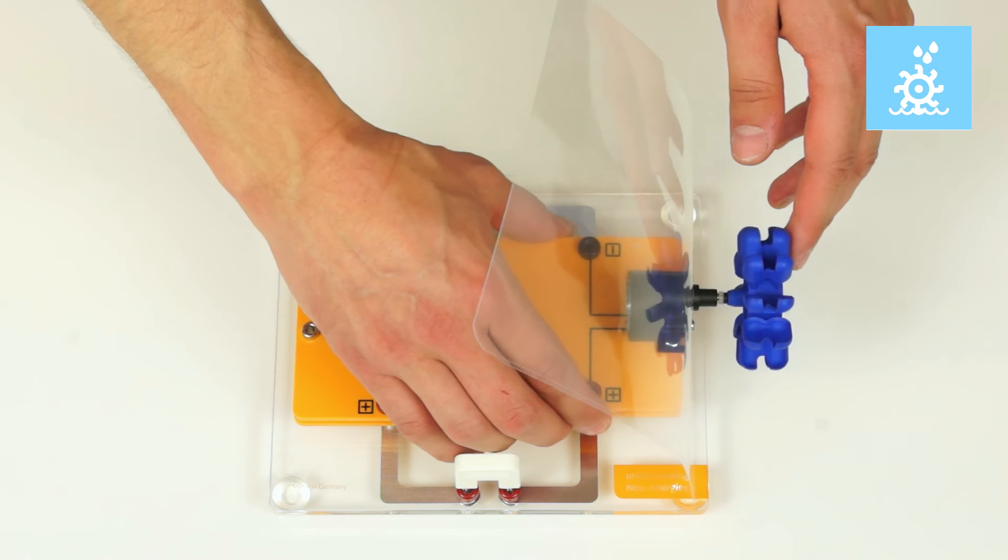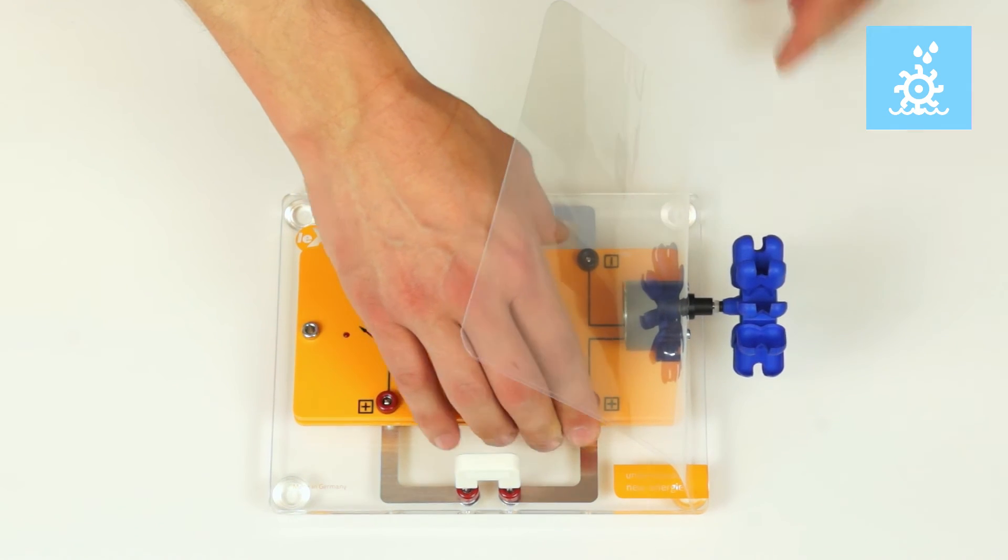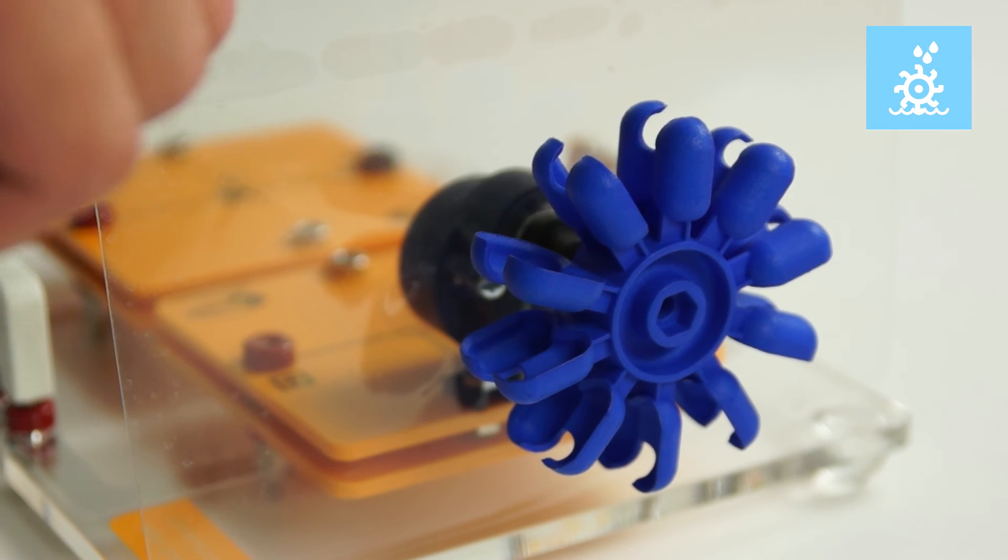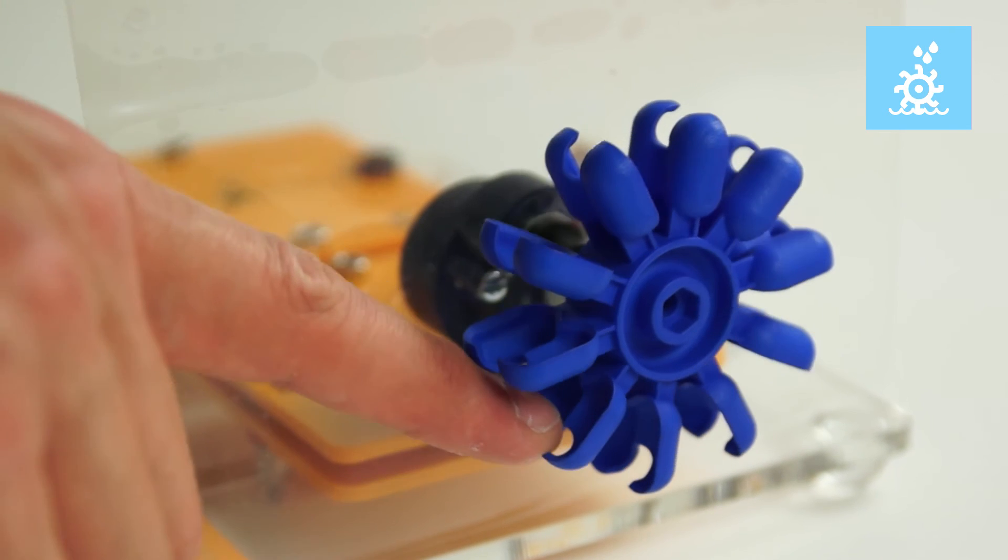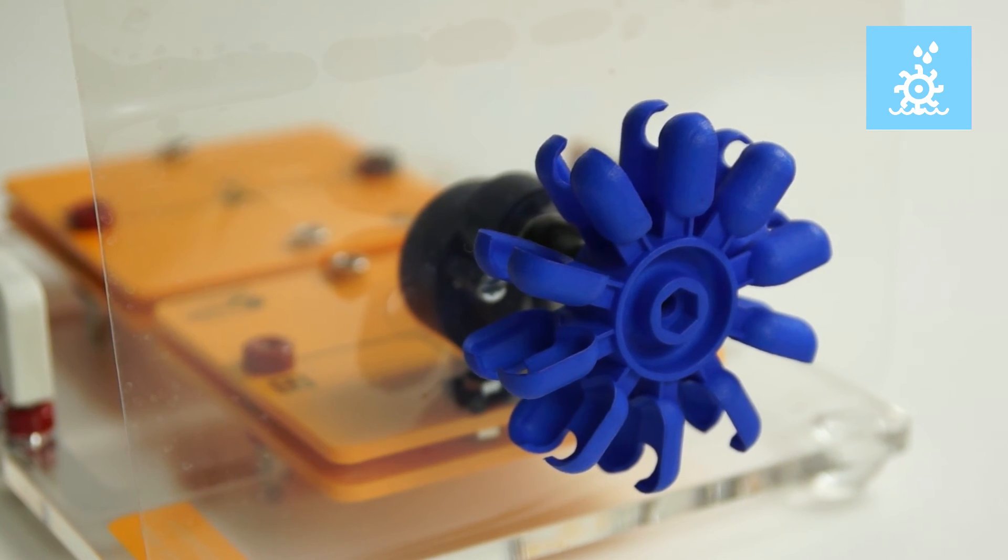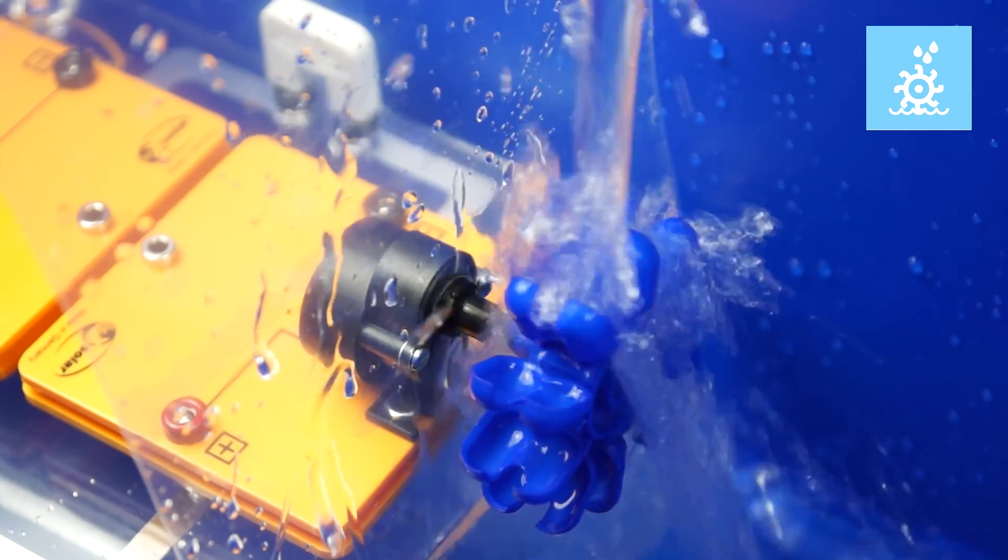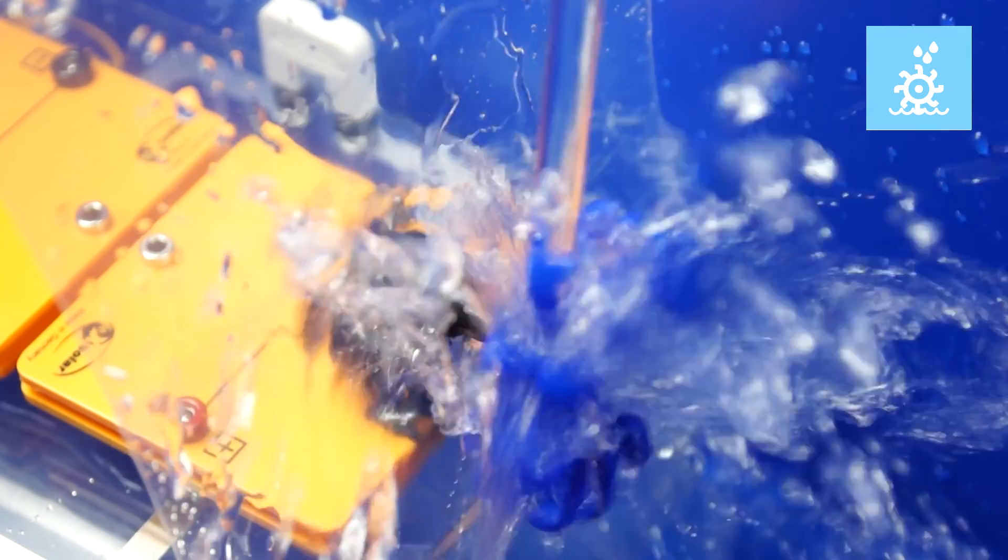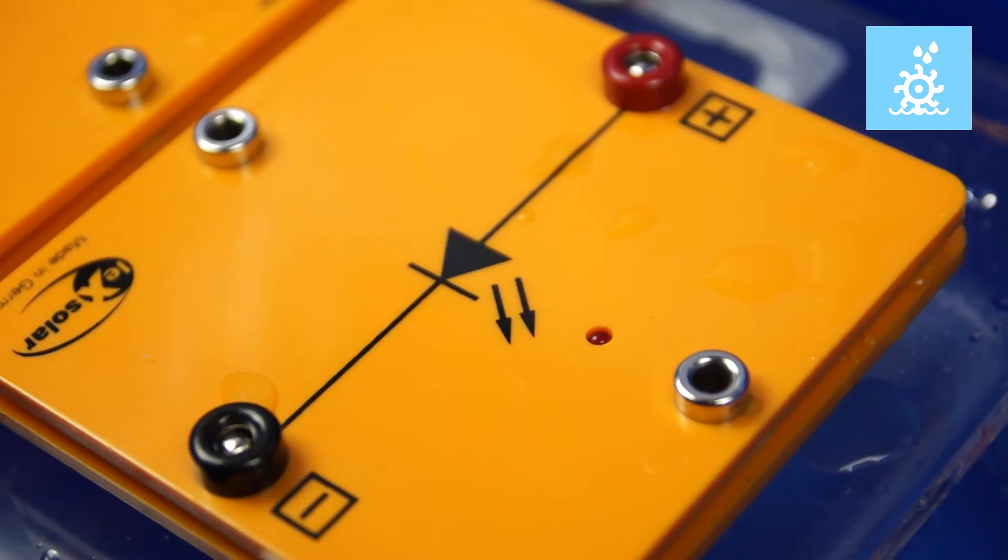The use of hydropower can be examined with the water wheel module. It includes a Pelton turbine and thus represents a typical technique from reality. Even at low waterfall heights, the water wheel module supplies enough energy for illustrative experiments like powering an LED module or a buzzer module.